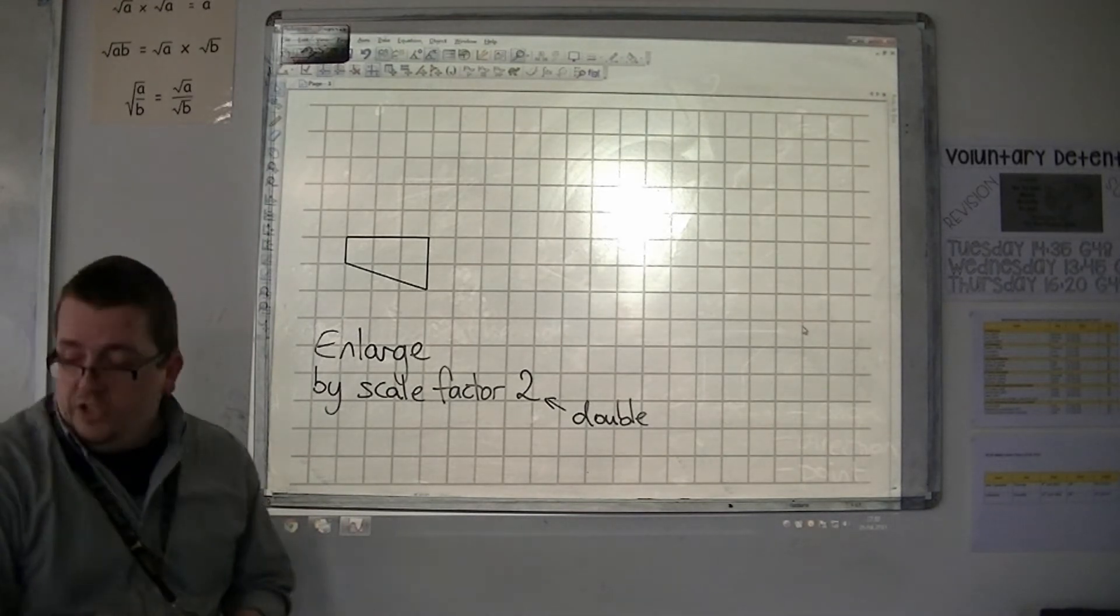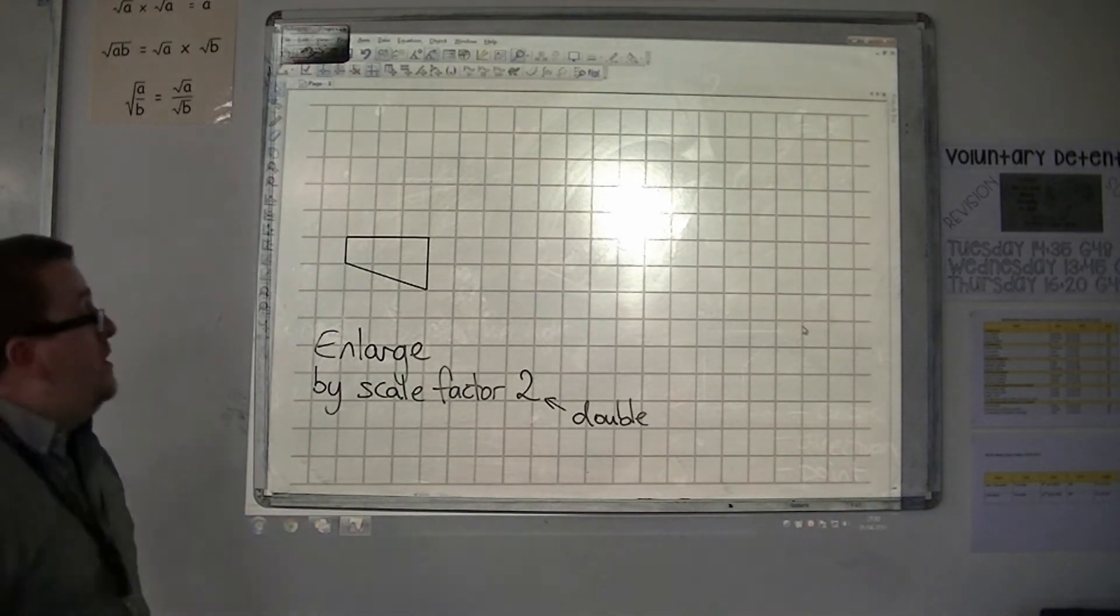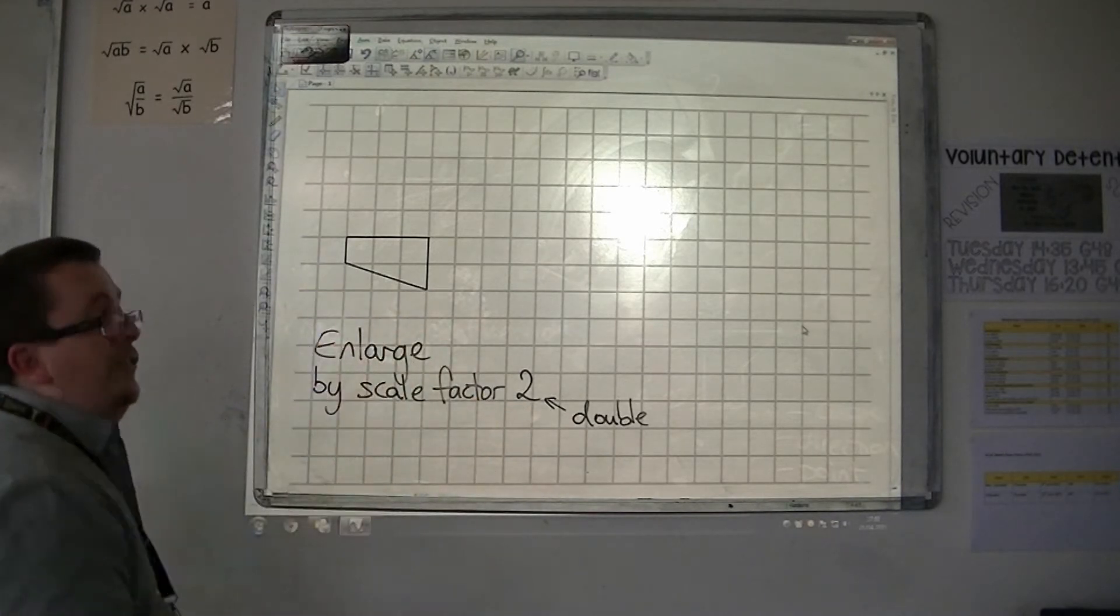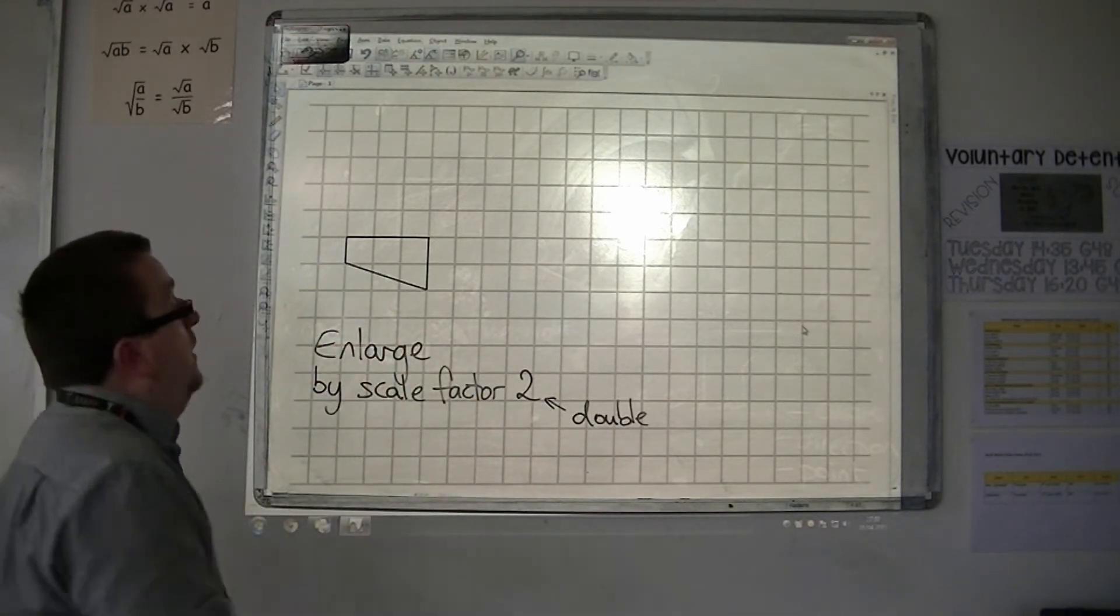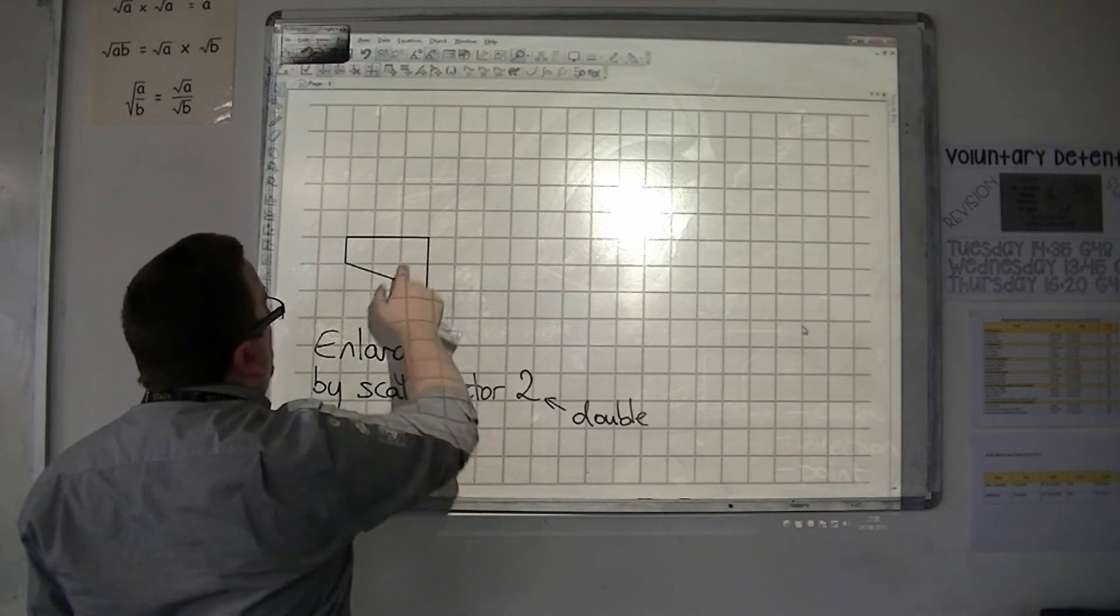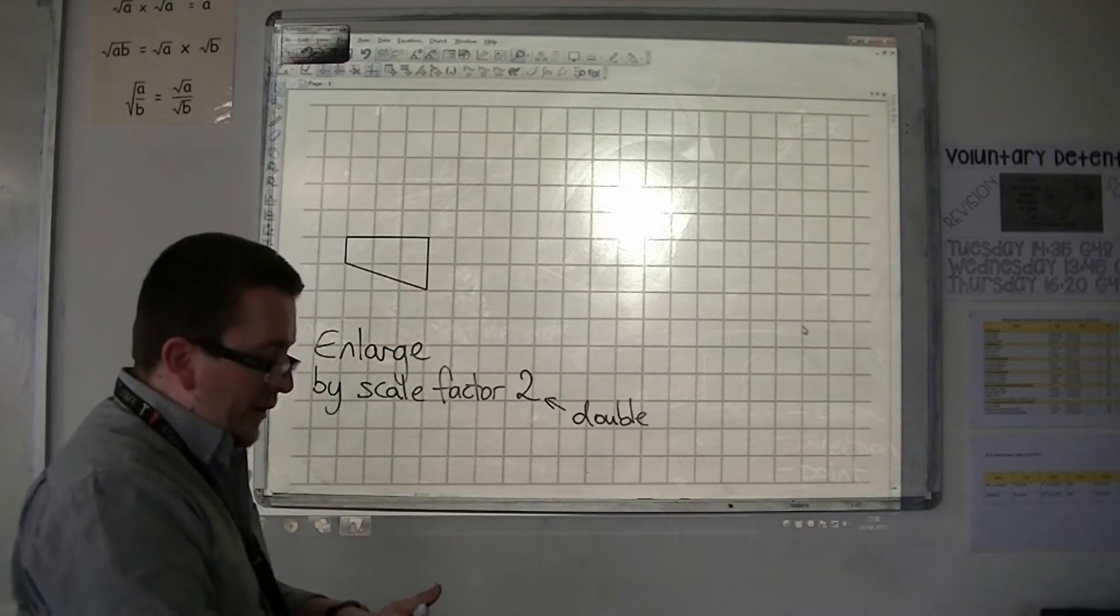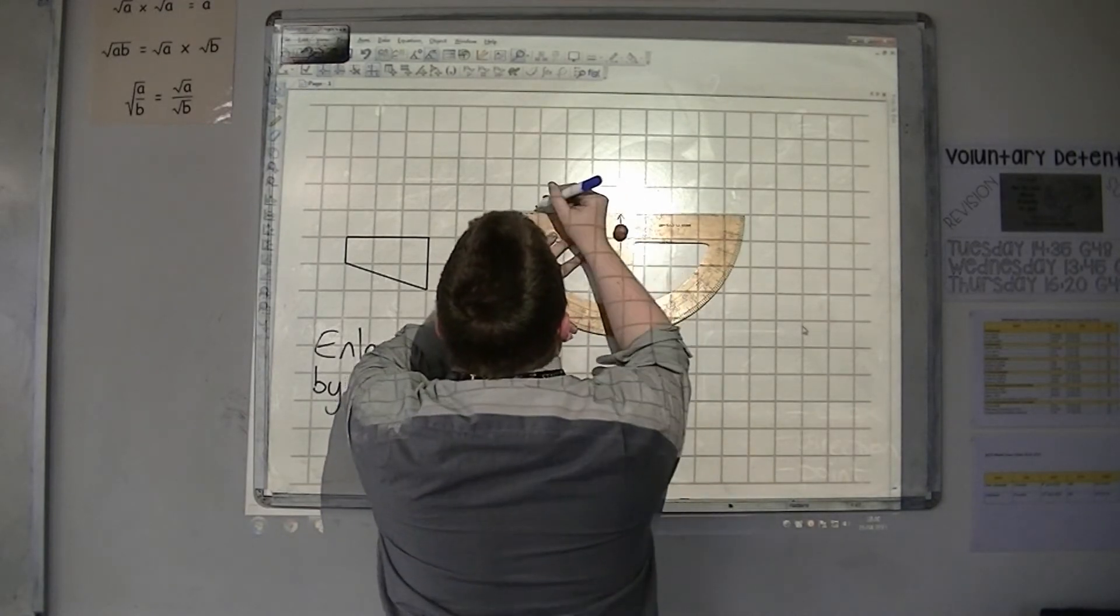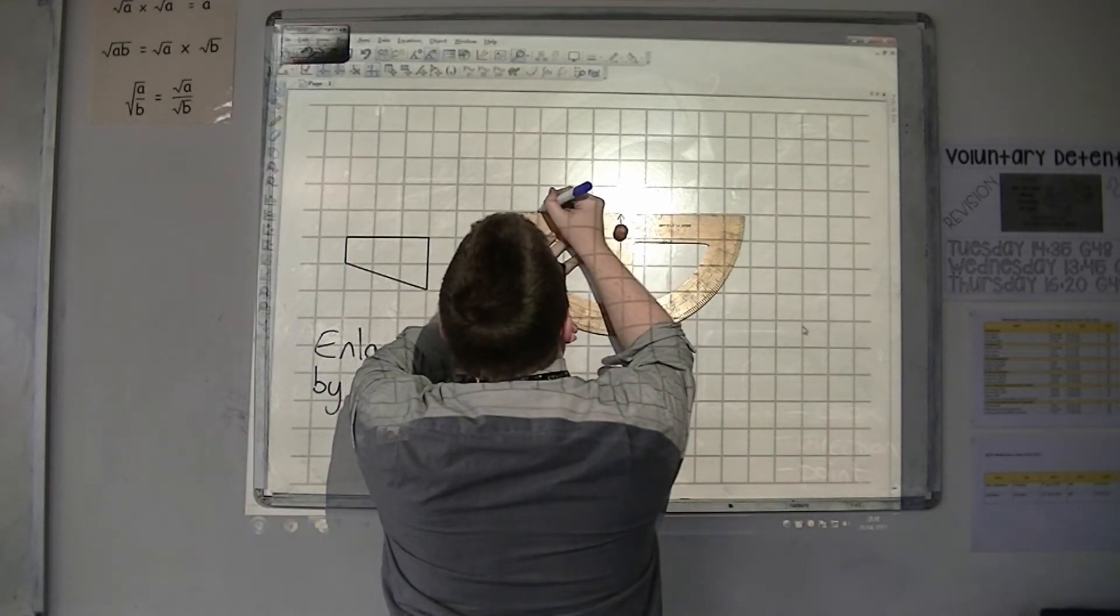So, what I'm going to do is I just need to redraw this shape, but with all the lengths twice as long. So, this top part is 3 squares long, and so the top should be 6 squares long.